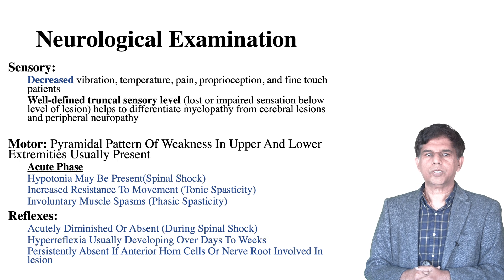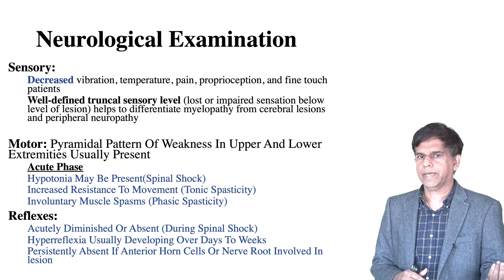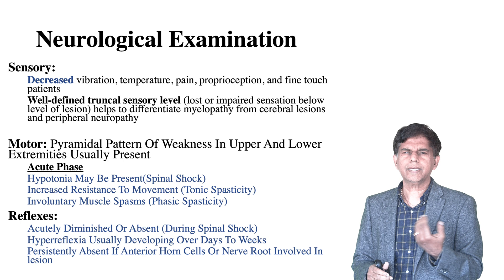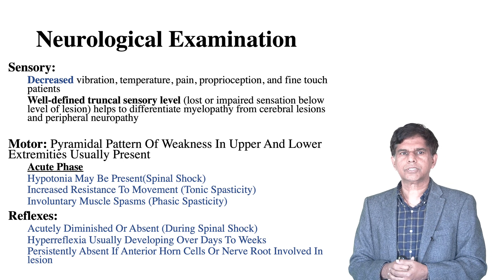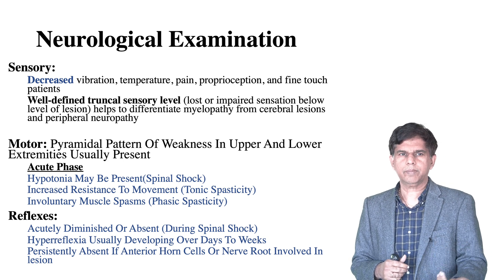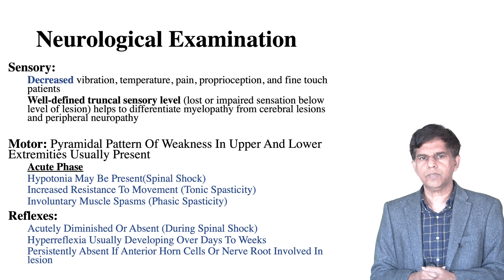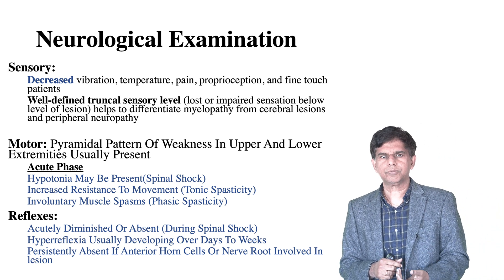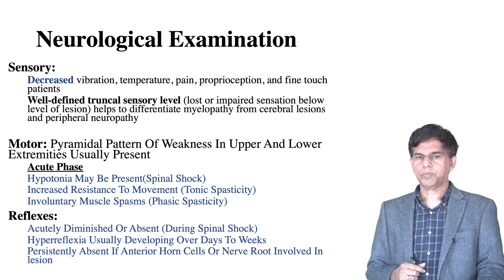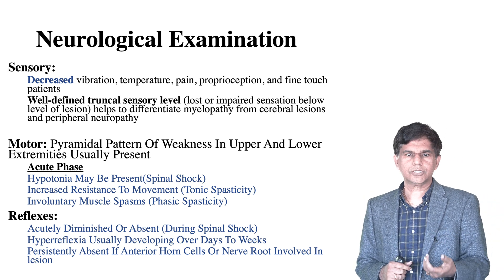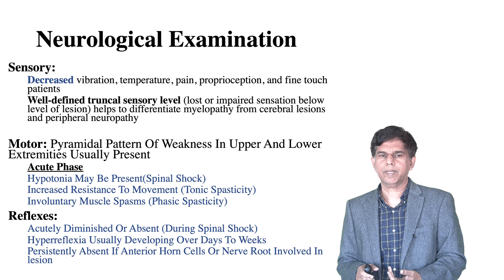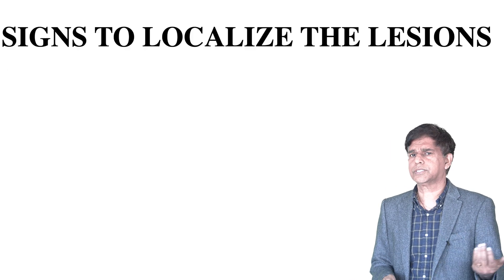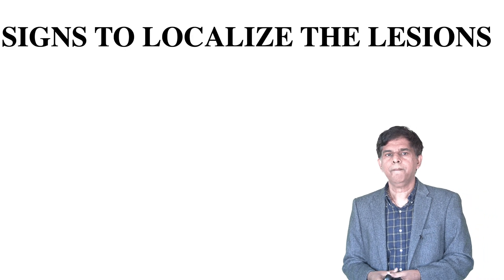A well-defined sensory level represents loss or impaired sensation below the lesion and helps differentiate myelopathy from other CNS cerebral lesions and peripheral neuropathy. For motor findings: pyramidal pattern of weakness in upper and lower extremities, hypotonia in the acute phase, spinal shock, increased resistance to movement, involuntary muscle spasms, and reflexes that are acutely diminished or absent. Hyperreflexia develops over days to weeks.